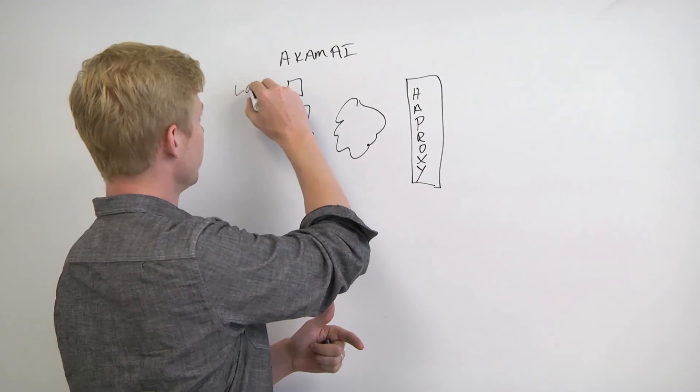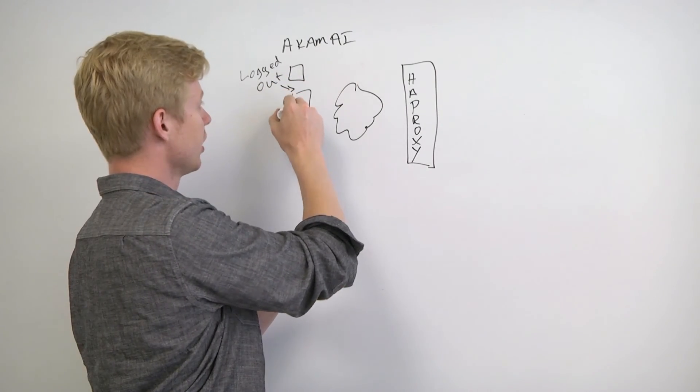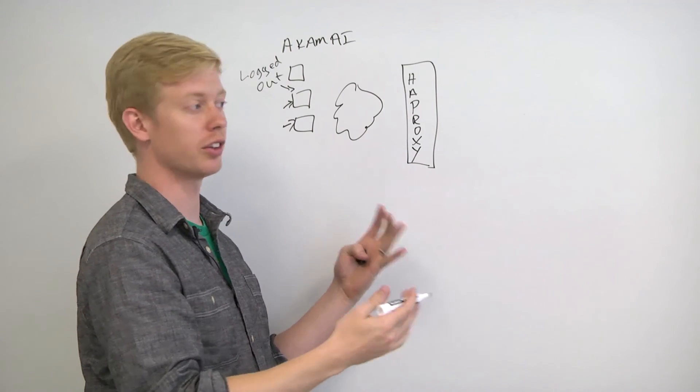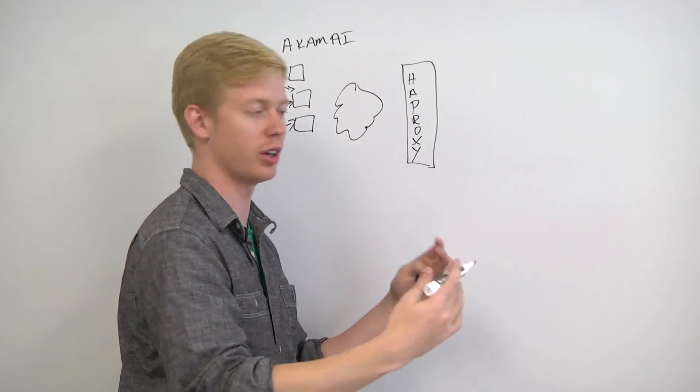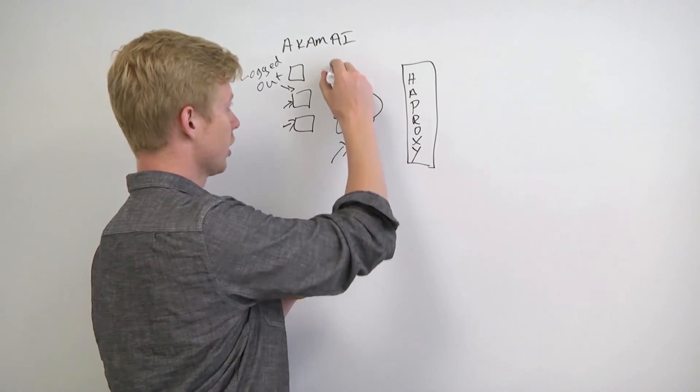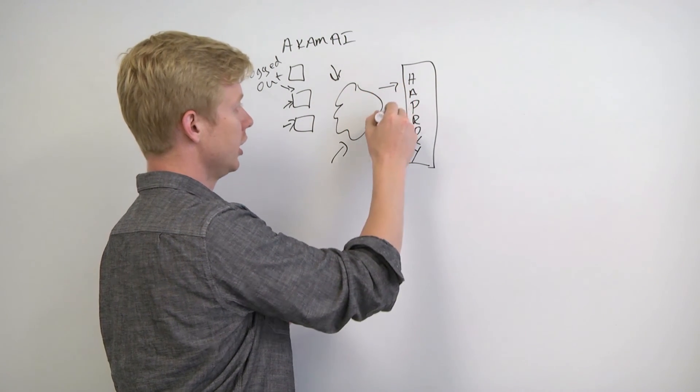And logged in users who have custom content, their username, their votes, all that stuff, come in via the internet and hit HAProxy directly.